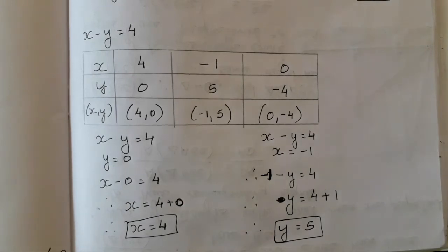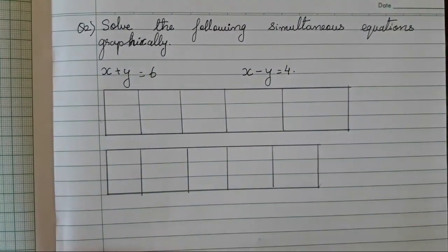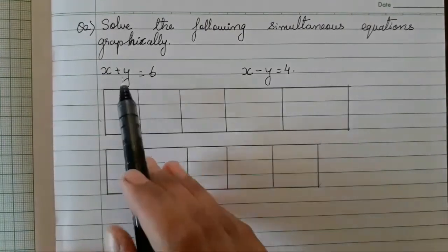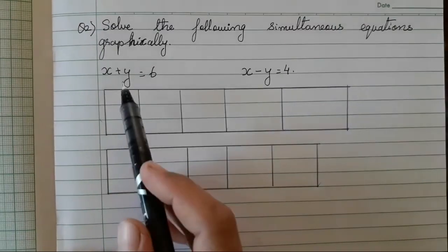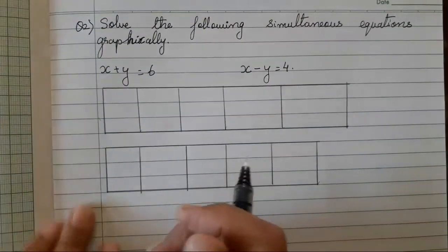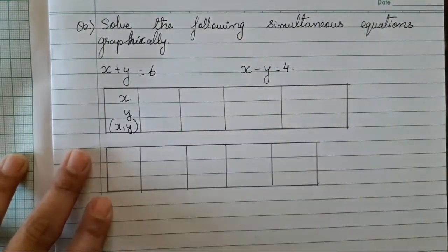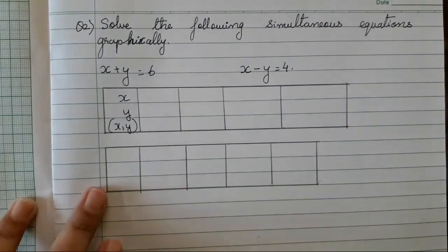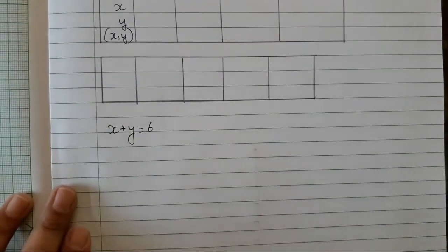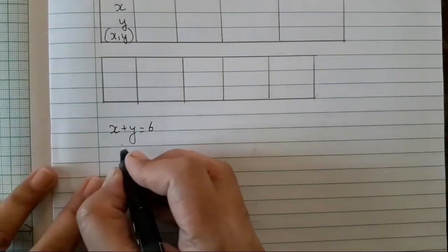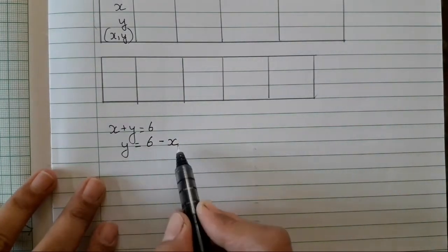Now let's move to the next question: solve the following simultaneous equations graphically. We have to find x and y values for both equations, which is why I have drawn two different blocks. For the first equation x plus y is equal to 6, we rearrange it to y is equal to 6 minus x.